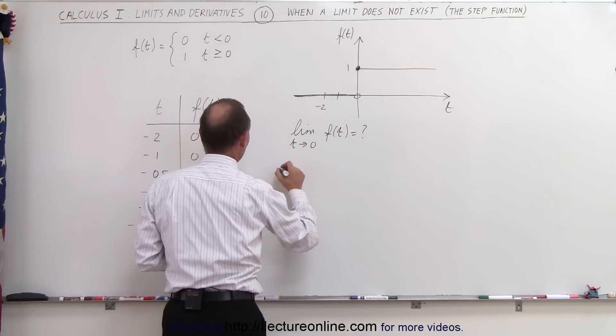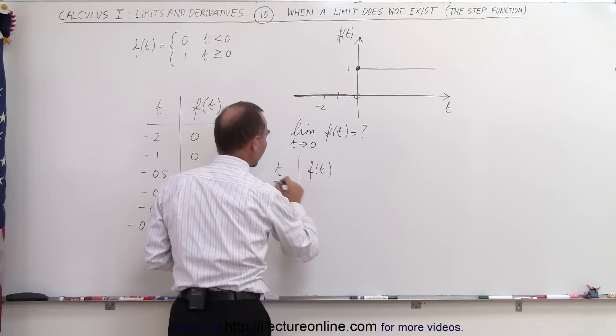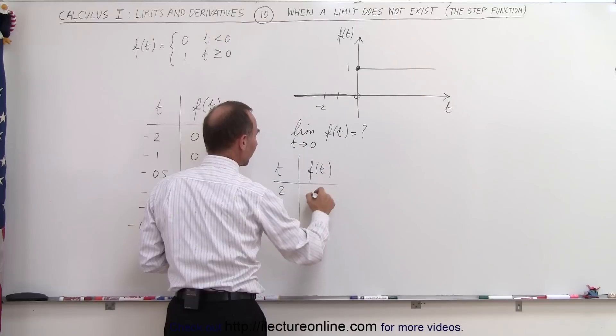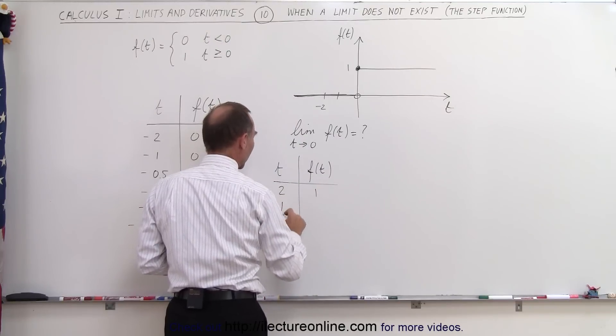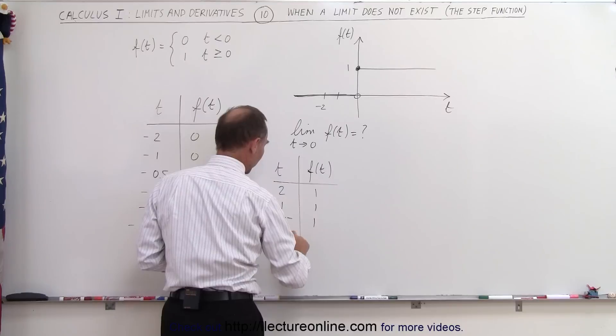So again, we have a table of values t and f of t, and let's say we start at the value 2, and f of t would be 1, and 1 still 1, 0.5 still 1, 0.1 still 1. You can see that as you get closer and closer to 0, as t approaches 0, the function appears to be equal to 1.